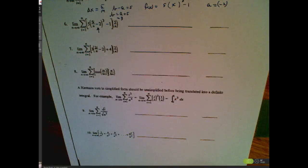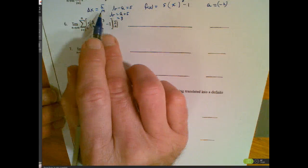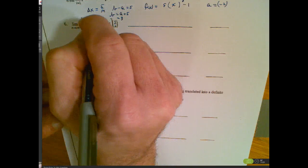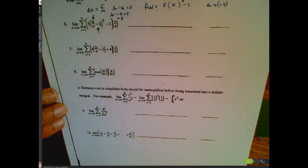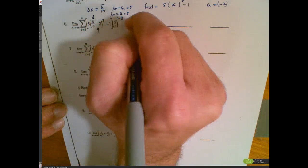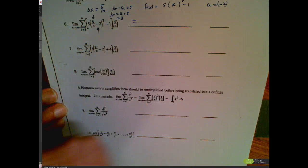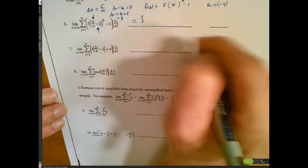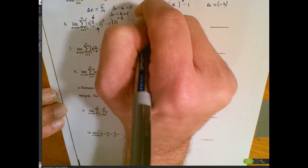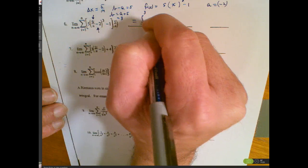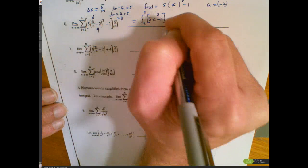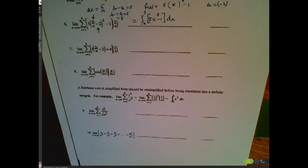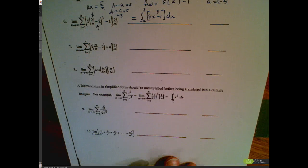I've got all the puzzle pieces together. My delta x is 5/n, so delta x times i gives me 5i/n — that fits. This Riemann sum represents the definite integral from -2 to 3 of 5x³ - 1 dx.